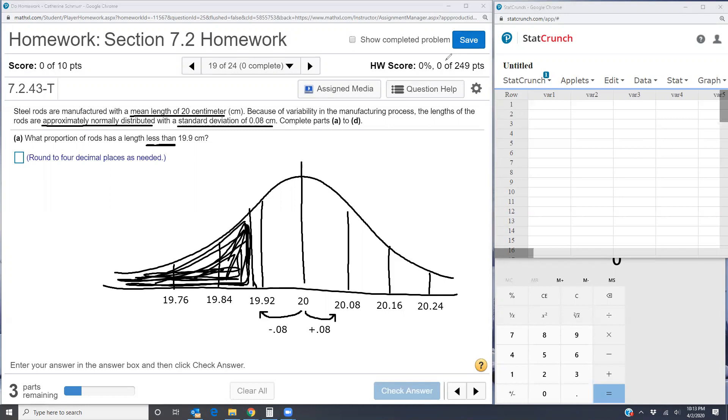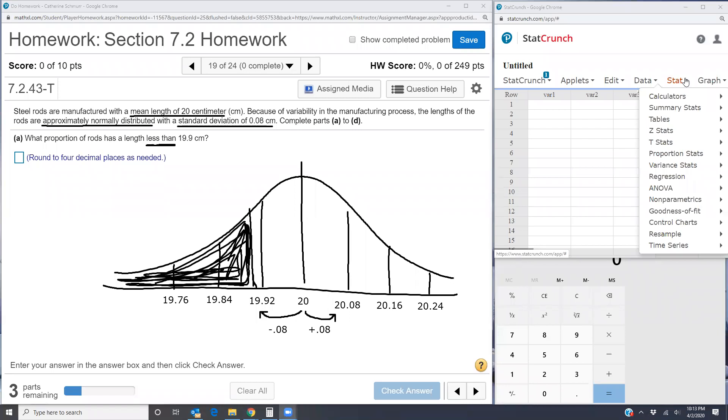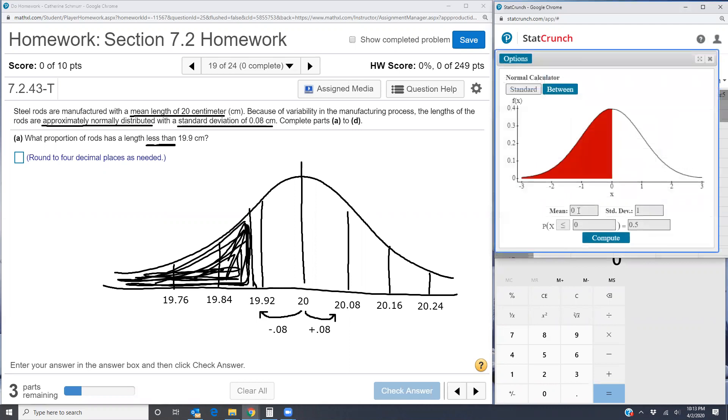To find that area, the easiest thing to do is use the normal calculator in StatCrunch because we have a normal distribution. I'll go stat calculators normal. I'm going to put in the given mean of 20. I'm going to put in the standard deviation of 0.08.